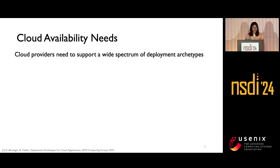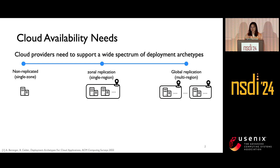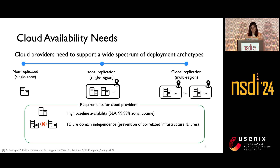A cloud provider needs to provide a wide spectrum of deployment archetypes, ranging from a non-replicated version within a single zone, to a zonal-level application within a single geographic region, and also to a more sophisticated version piecing together multiple regions. To provide high availability, the cloud provider needs to provide four-nines availability for each zone, which is especially important for non-replicated users. The cloud also needs to provide failure domain isolation to avoid correlated failures across zones; otherwise, the user's replication effort can become useless.